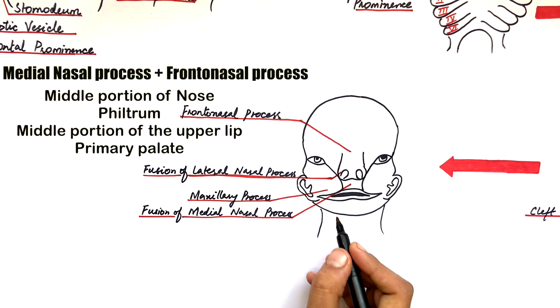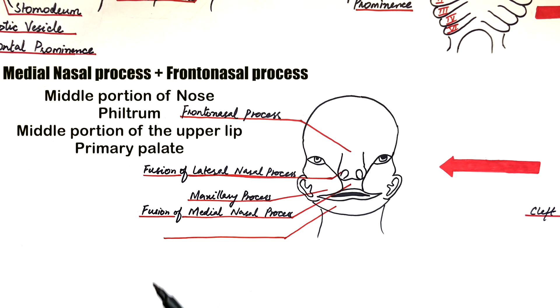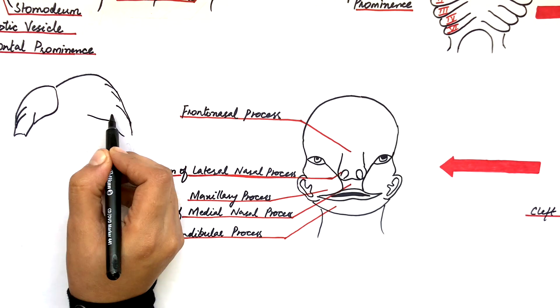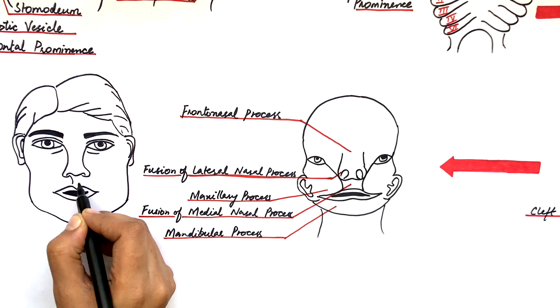This includes the philtrum, the upper lip, and the primary palate. The lower lip will be formed by the fusion of the two mandibular processes. And this will be the location of the fused processes on an adult face.